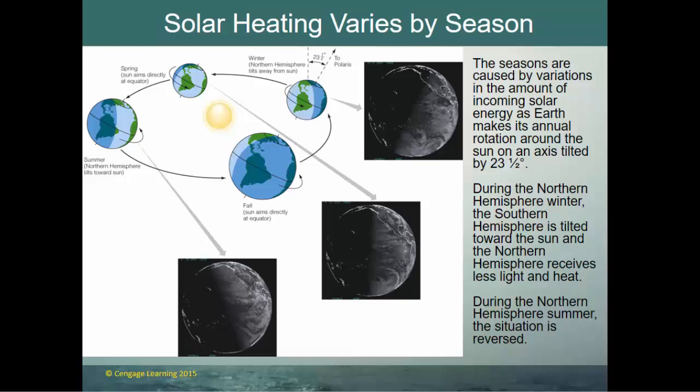During spring and fall, the axis points in the same direction, but the globe is positioned on the side of its orbit so the entire globe is heated evenly — giving 12 hours of daylight and nighttime. In summertime you get longer days, in wintertime shorter days. During the Northern Hemisphere winter, the Southern Hemisphere is tilted toward the Sun and receives more light; during Northern Hemisphere summer, the situation is reversed. That's the reason for the seasons.